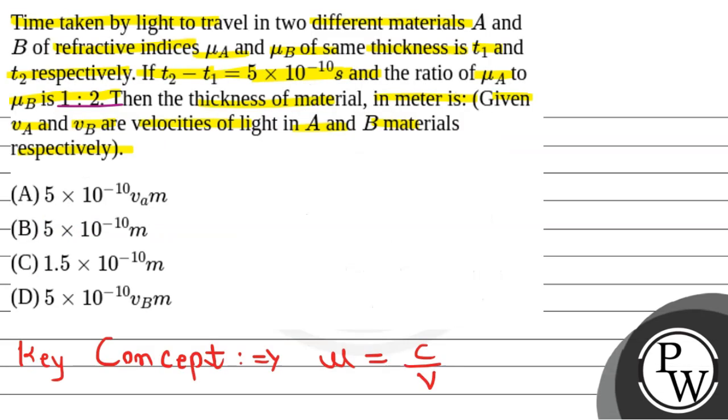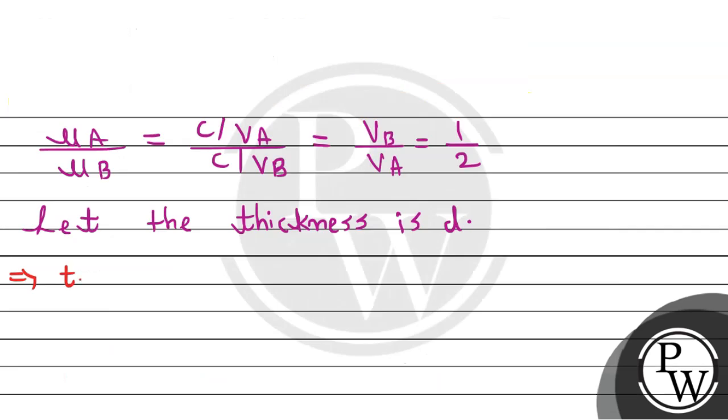According to the question, we're given that time T2 minus T1 is equal to 5 into 10 to the power minus 10 seconds.